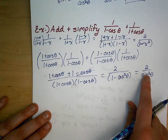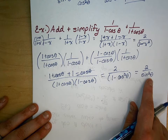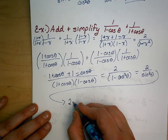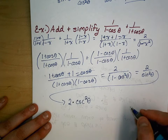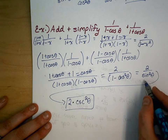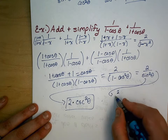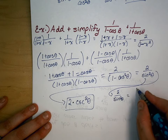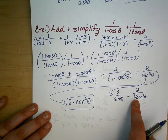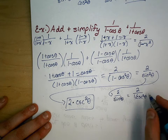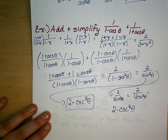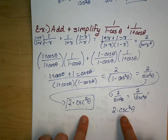Now this might look like it's in a pretty simple form, but I'd like you to rewrite that 2 over sine squared theta as a cosecant. So that becomes 2 times cosecant squared theta, and this is your answer. We can rewrite 2 over sine squared theta as 2 divided by 1 over cosecant squared theta using the reciprocal identity, and dividing is the same as multiplying by the reciprocal, so that becomes 2 times cosecant squared theta — same answer both ways.